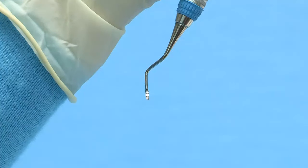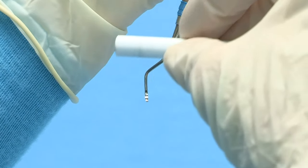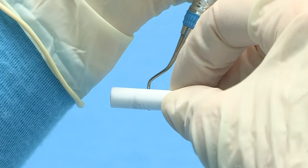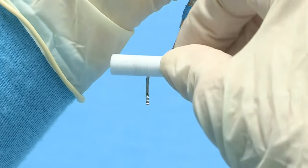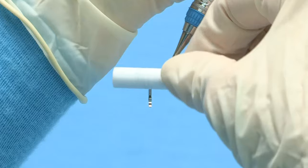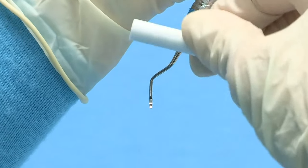To finish sharpening a universal curette, hold the blade at eye level with the terminal shank at 12 o'clock with the toe pointed toward you. Position the cylindrical stone along the face of the instrument at 3 and 9 o'clock. With slight downward pressure, roll the stone along the face from the heel to toe, removing any wire edges.